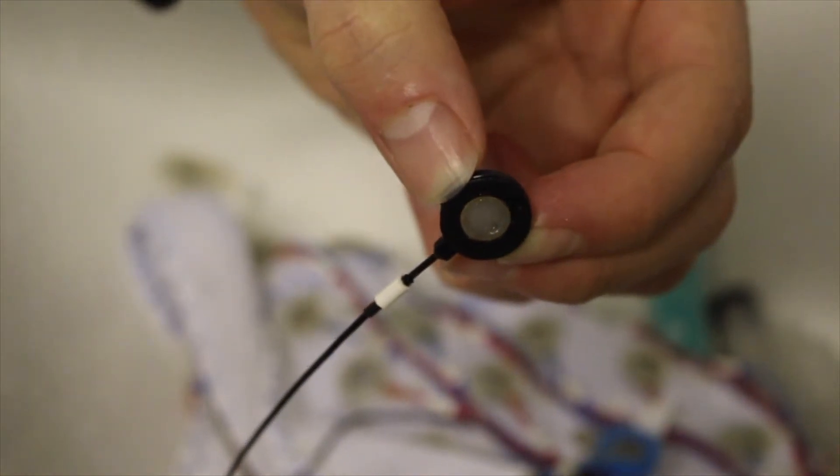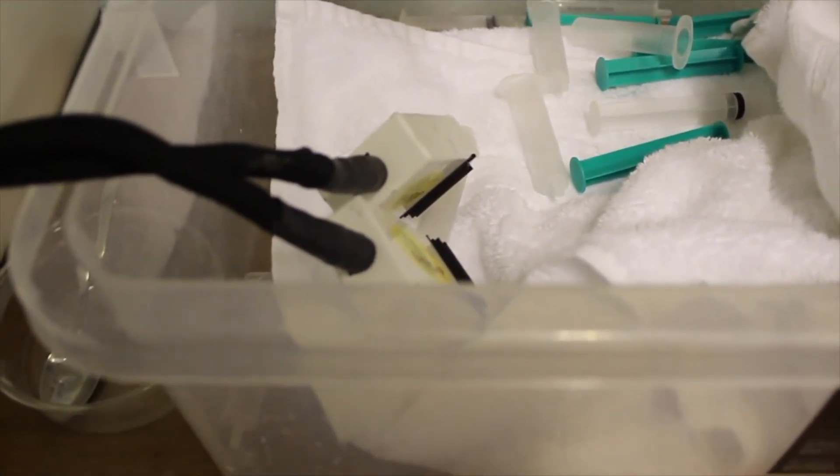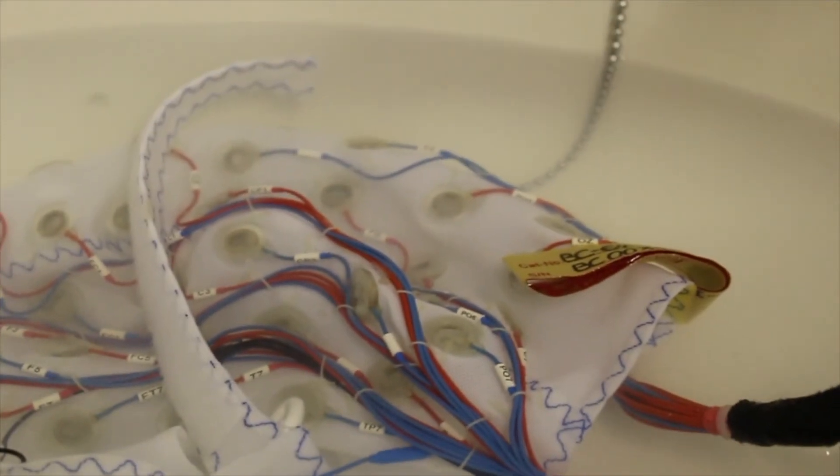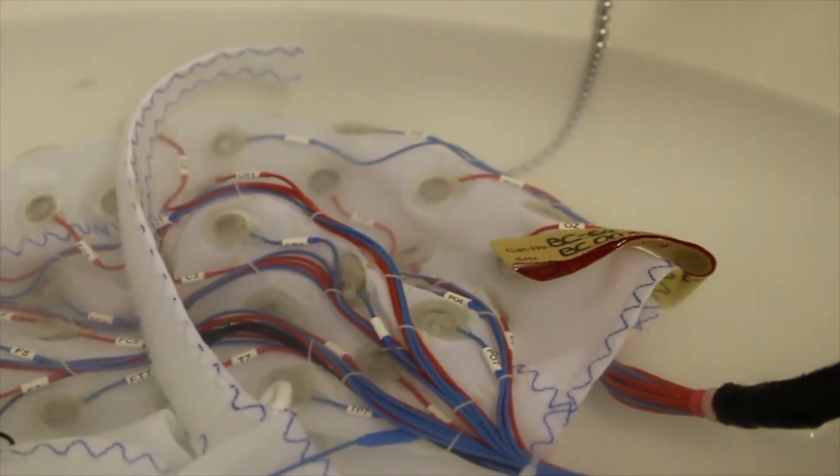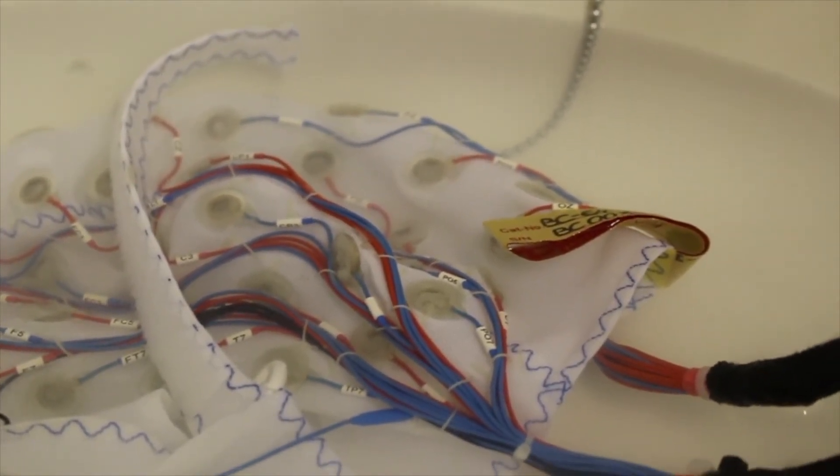Place the cap in the sink, keeping the cords well out of the way of any water. These must not get wet. Fill the sink with lukewarm water and leave the cap to soak for a few minutes. This will make the gel much easier to remove.